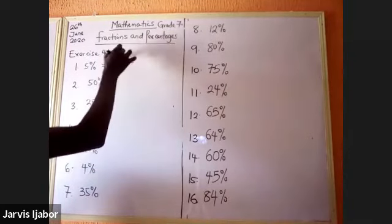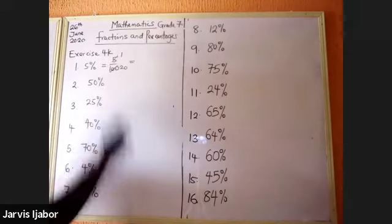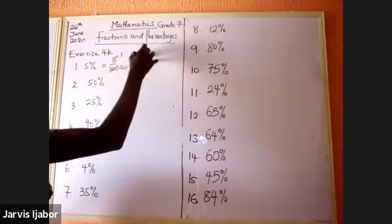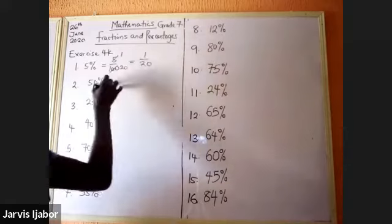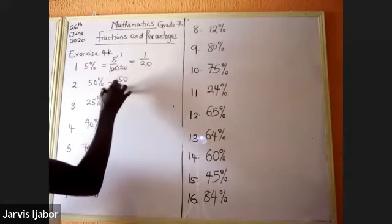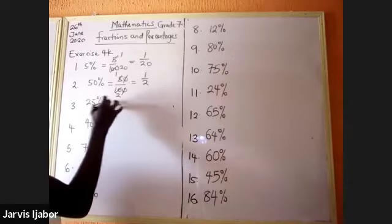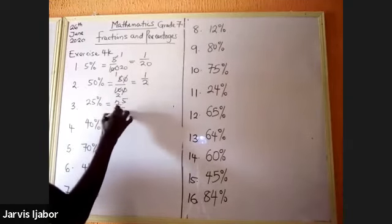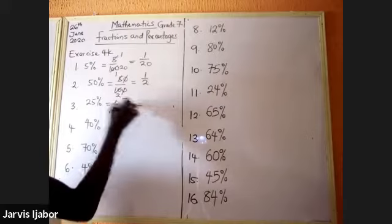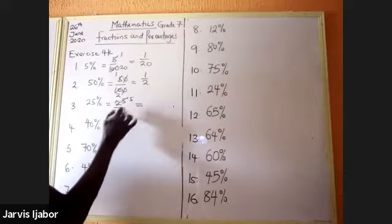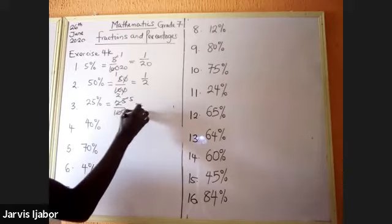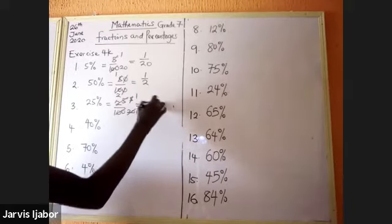You cancel: 5 goes into 5 once, 5 goes into 20 four times — so 5 percent reduces to 1 over 20. Next, 25 over 100: 5 goes into 25 five times, 5 goes into 100 twenty times, then 5 goes into 5 once and 5 goes into 20 four times — that's 1 over 4.